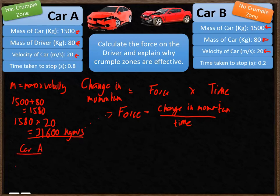So the force acting on the driver in car A is equal to the momentum, which is 31,600, divided by the time, which is 0.8. So that gives me a total force on the driver of 39,500 newtons.